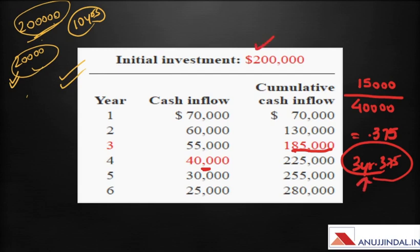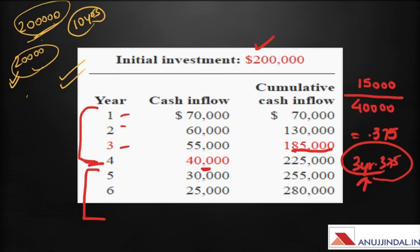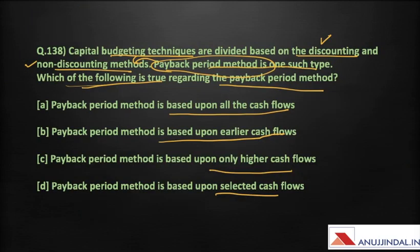The main problem with the payback period method is that after the capital is recovered, it ignores all other cash flows. It considers only the earlier cash flows and not all cash flows. There is also no criteria for the selection of cash flows — it considers cash flows only until the capital is recovered. Therefore, the answer is that the payback period method is based upon the earlier cash flows, that is option B.